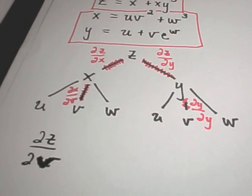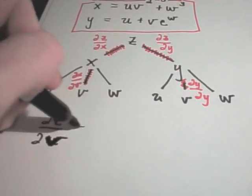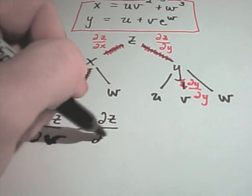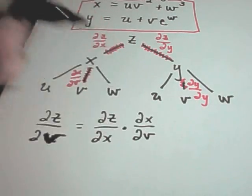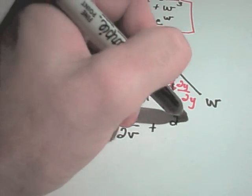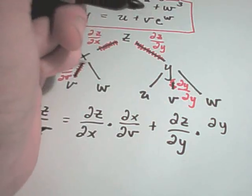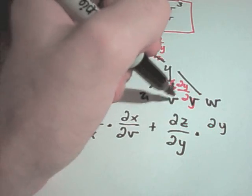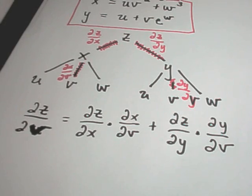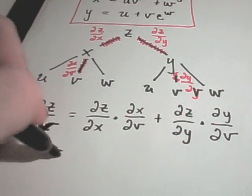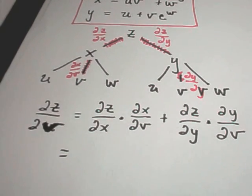So these are the things I have to multiply and then add together. The partial of z with respect to v equals the partial of z with respect to x times the partial of x with respect to v, and then I add onto that the partial of z with respect to y times the partial of y with respect to v. I calculated the partial of z with respect to x and y in the other video.